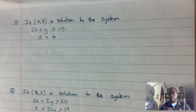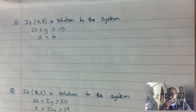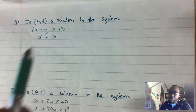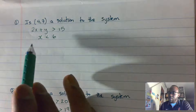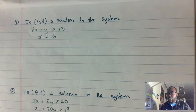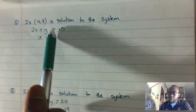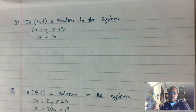Good morning everyone. Today we're going to start a new topic. We're going to determine if an ordered pair is a solution to a system. As you can see I have a few examples here. It says: is (4,7) a solution to the system? In order for this to be a solution, both statements — 2x + y > 15 and x < 6 — have to be true.